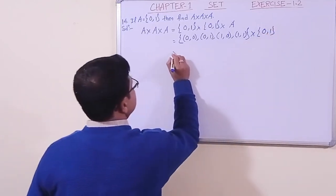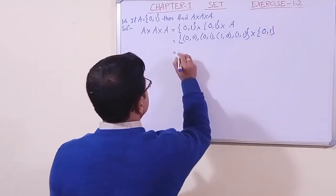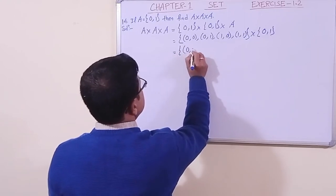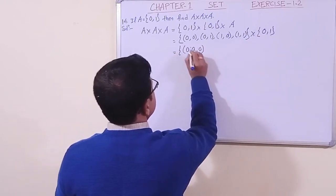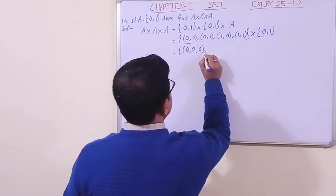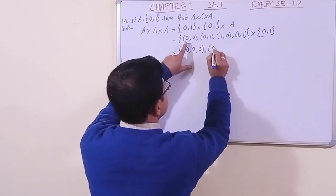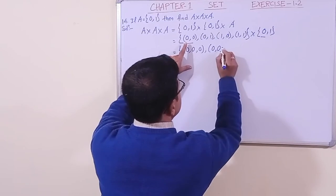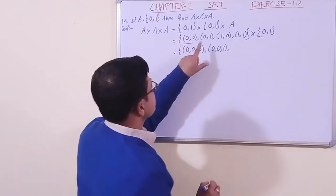The elements will be triplets. Starting with 0, 0, we pair with 0 to get (0, 0, 0), then with 1 to get (0, 0, 1). We continue this process. With the second element 0, 1, we get (0, 1, 0), then (0, 1, 1).